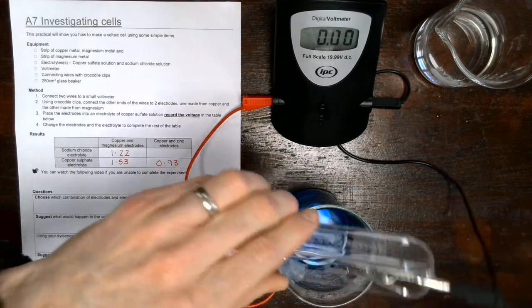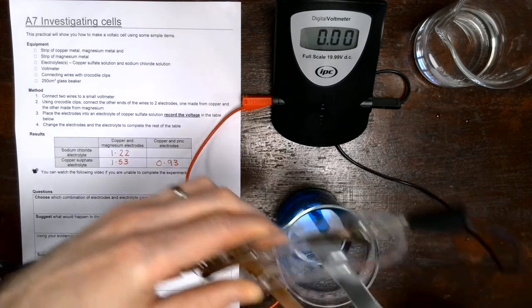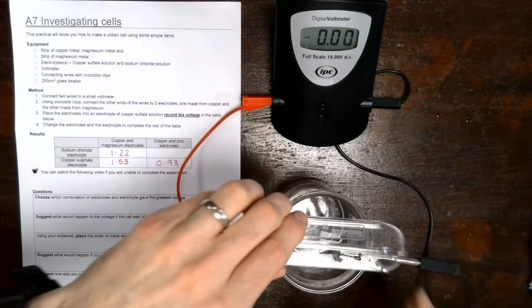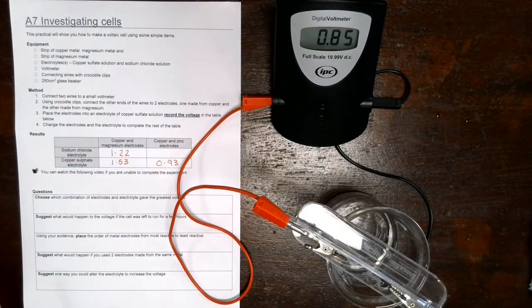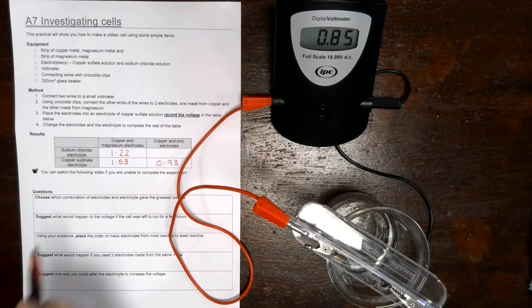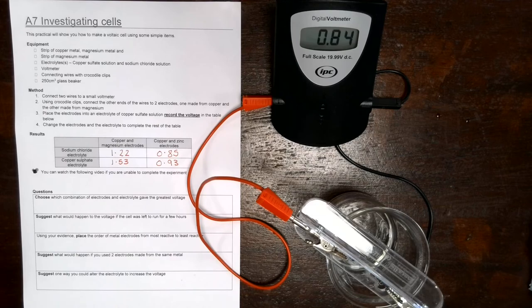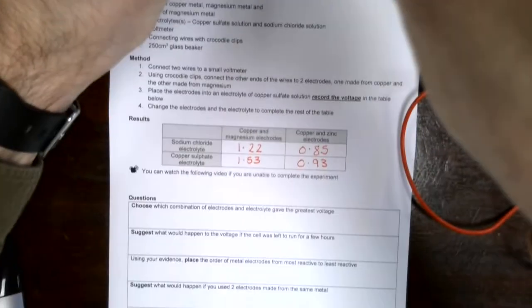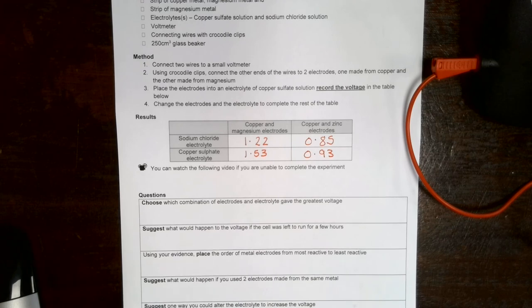Final one to do, so we've just now got to change over the electrolyte. Let's clean these up. We're going to take some sodium chloride solution, place it there, and now we get a value of 0.85. Okay, so I'll just move the camera in so you can get a close-up of the results. If you want to pause the video at this moment you can, so you can record the results, and you should now be able to complete the questions at the bottom of the page.